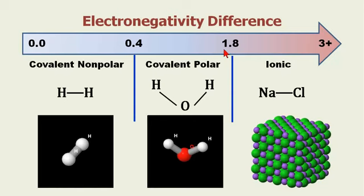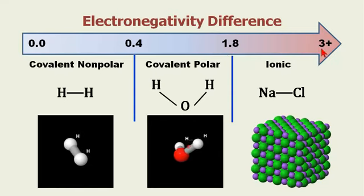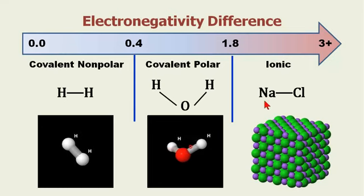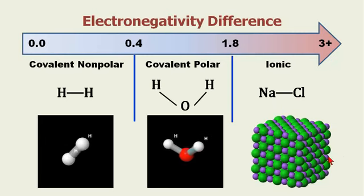When we start getting a difference somewhere between 1.8 to 3 or somewhere around there, really the electrons move all the way across and it's no longer considered shared, but it's considered a case where it's transferred from the sodium to the chlorine. And we represent that like this little figure here.